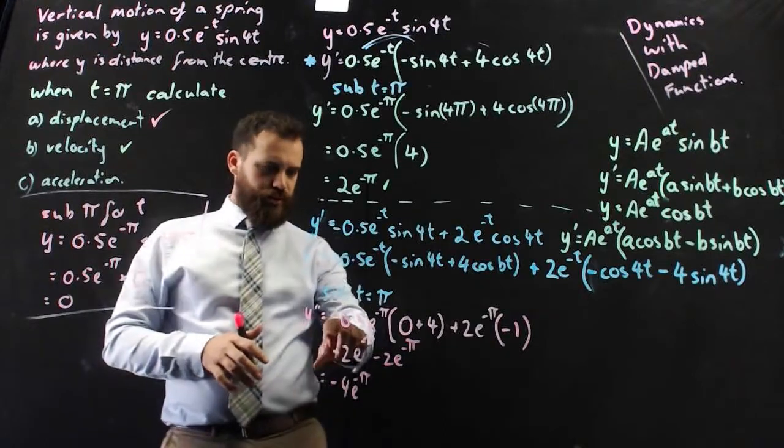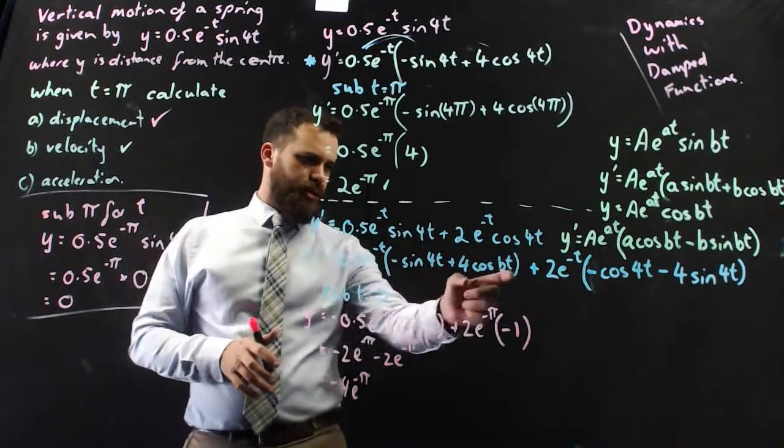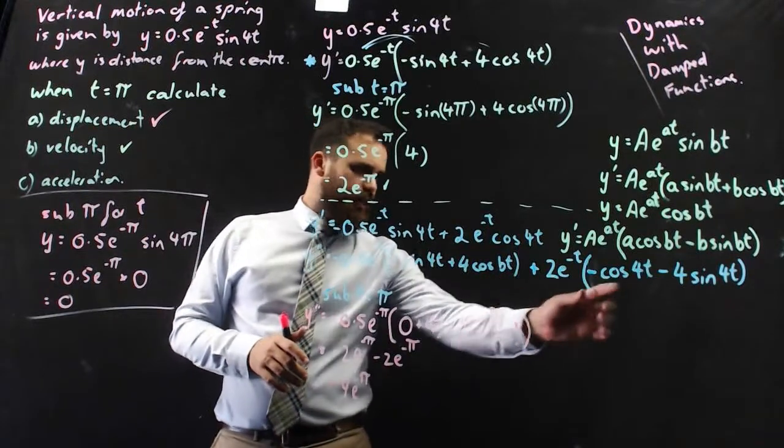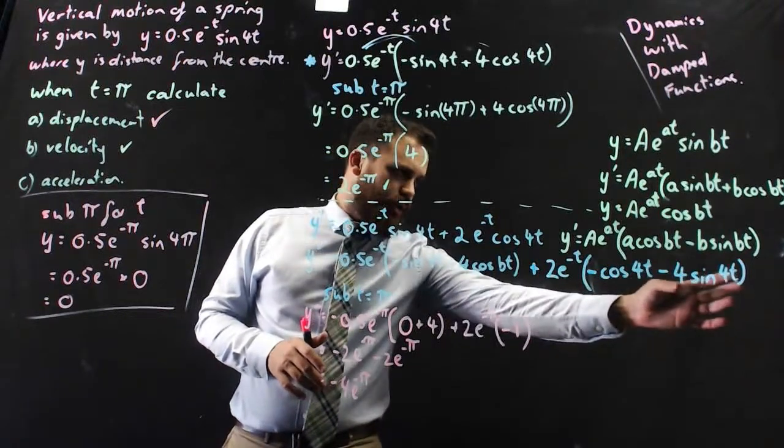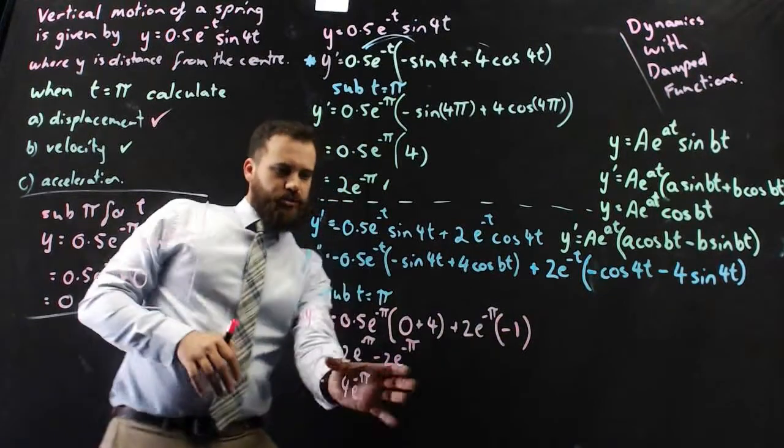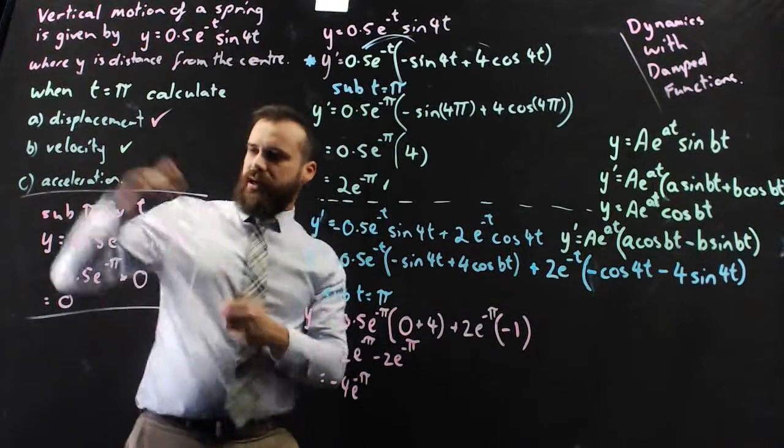Alright, so subbing pi in, what's going to happen? We're going to get zero here, we're going to get four times one here, four. We're going to get negative one here, and we're going to get four times zero there, so just the negative one. Subbing that all in, negative 4e to the negative pi. There's our acceleration.